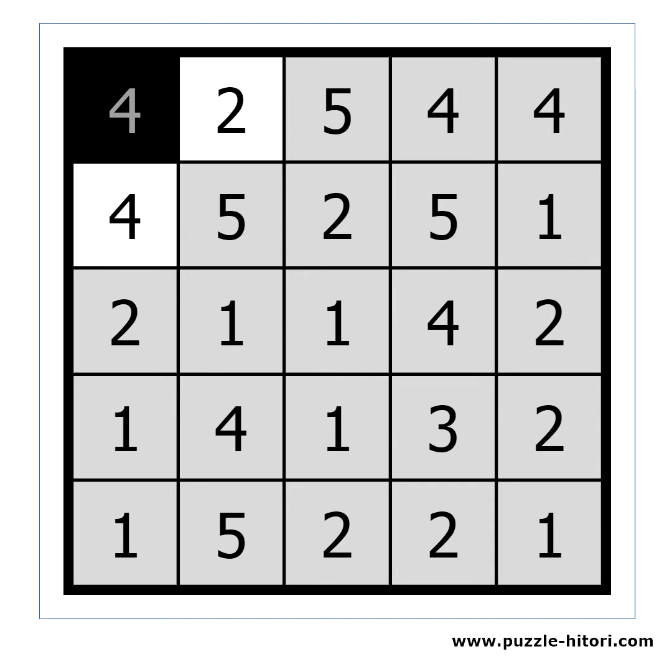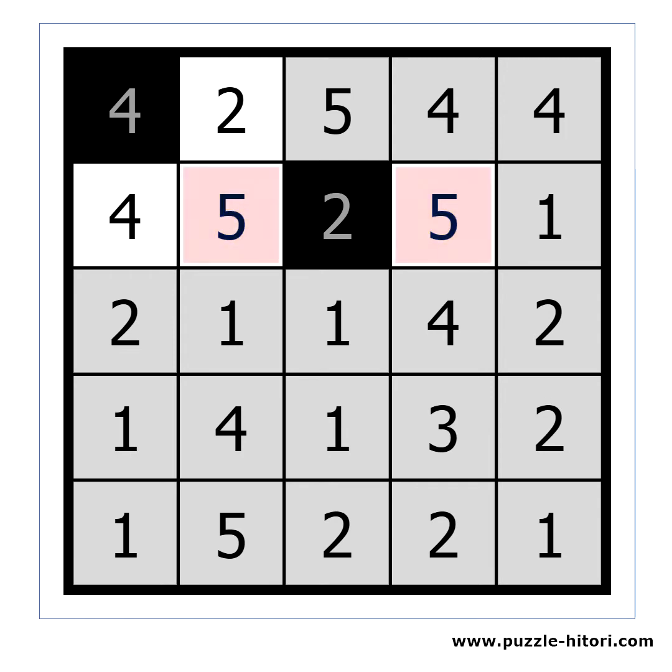The next thing we can look for is two of the same number which are one cell away from each other. For example, the fives on the second row. If the cell between them was black, both fives will need to be white, which is not allowed. This means that the cell between them must be white.